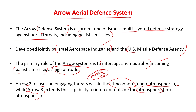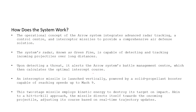How does this system basically work? The Aero system is integrated with radar tracking. This radar tracking uses the Green Pine system, which is capable of detecting incoming projectiles — missiles and drones.